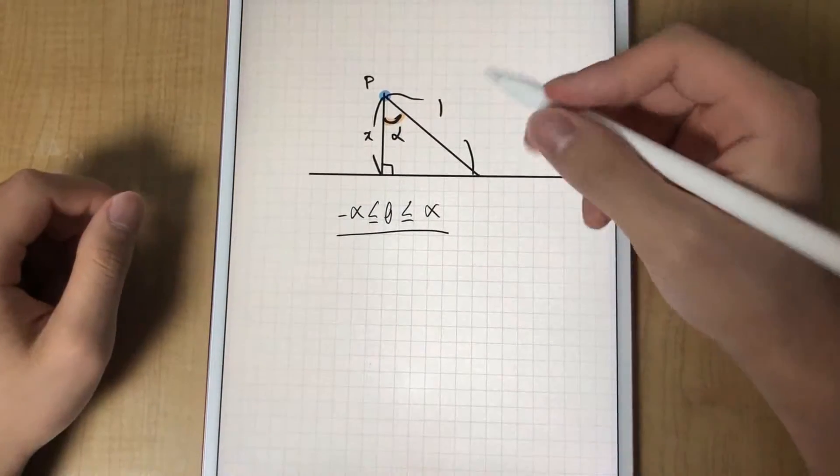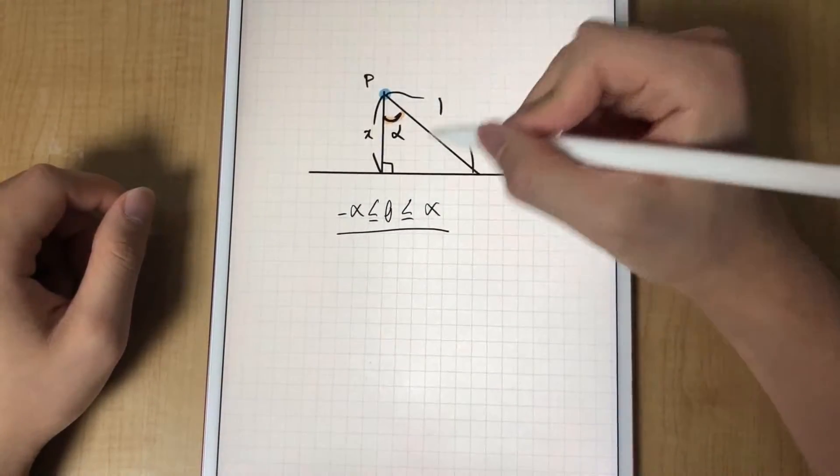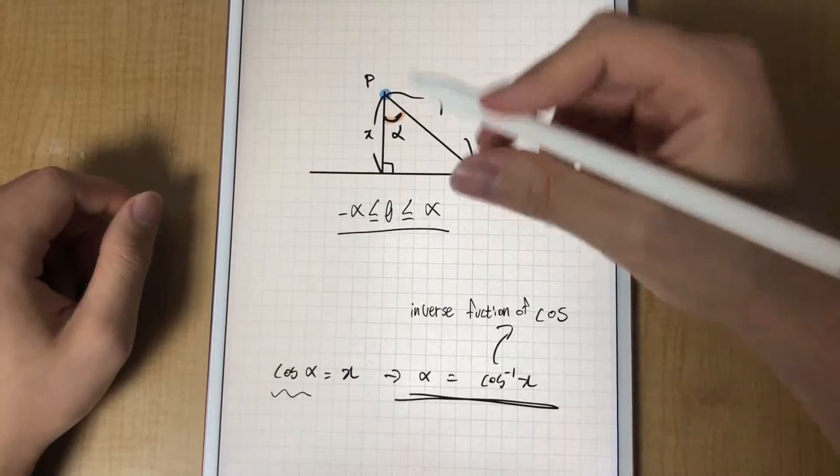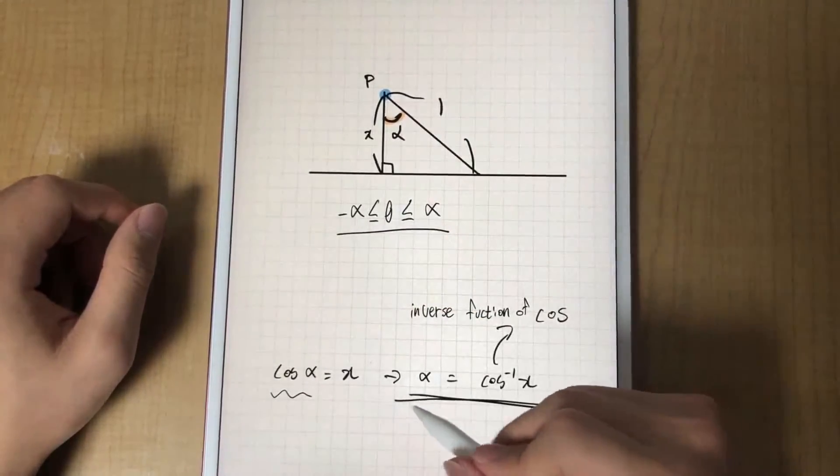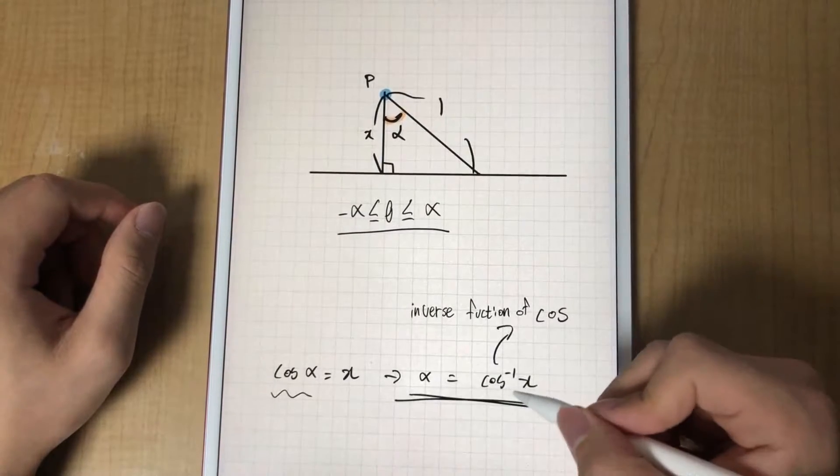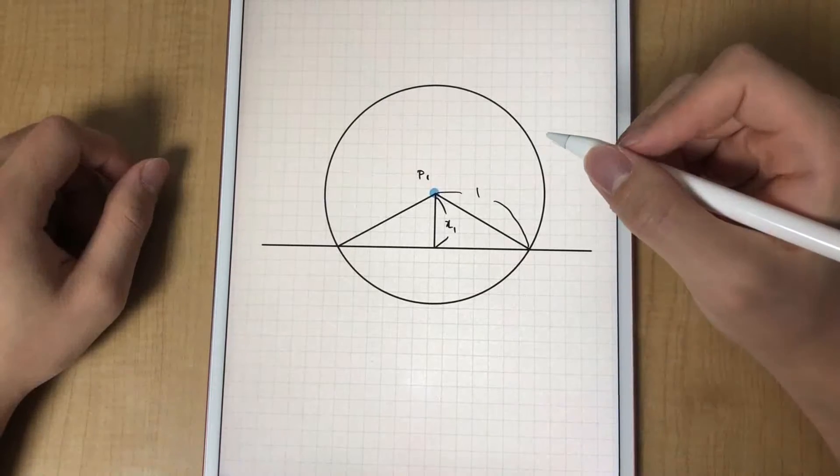You can see that alpha is related with x because cosine alpha is x. Thus we can write alpha as inverse cosine x. We're almost at the end.